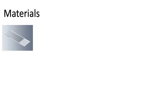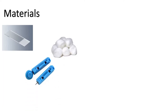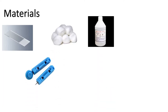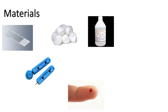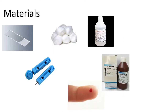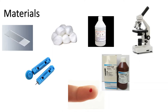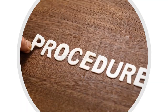The materials we need for this experiment are glass slides, a lancet, cotton, ethanol, a blood sample, the basic dye which is Giemsa, and a microscope to observe the slide.